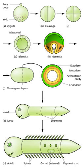Growth involves both an overall increase in size, and also the differential growth of parts — allometry — which contributes to morphogenesis. Growth mostly occurs through cell division but also through changes of cell size and the deposition of extracellular materials.